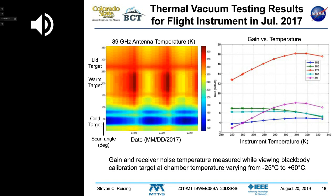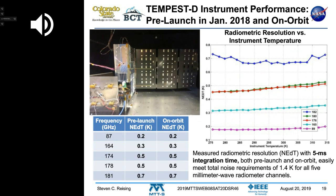We also measured receiver noise temperature over temperature to anticipate on-orbit performance. About six months later, in January 2018, the instrument was integrated inside the spacecraft and pre-launch thermal vacuum testing was conducted. The table shows the five channel center frequencies from 87 to 181 GHz — all direct detection radiometers — with NEDT ranging from 0.2 to 0.7 Kelvin.